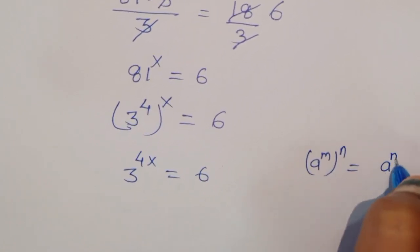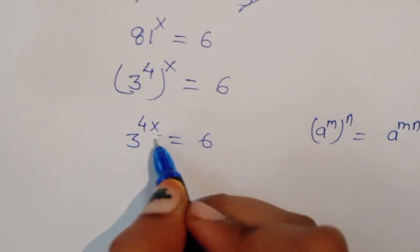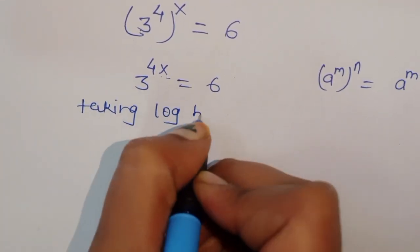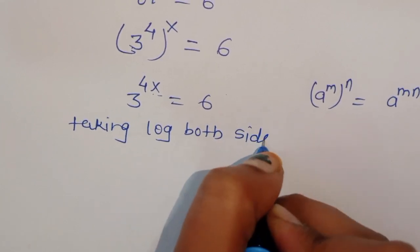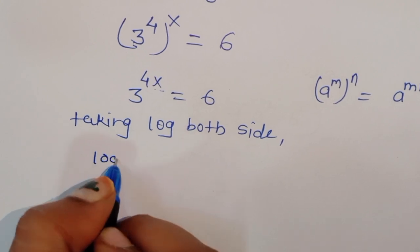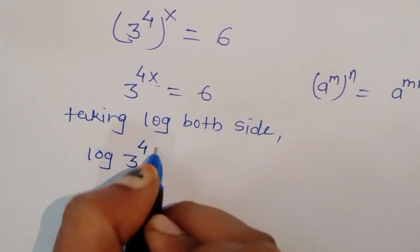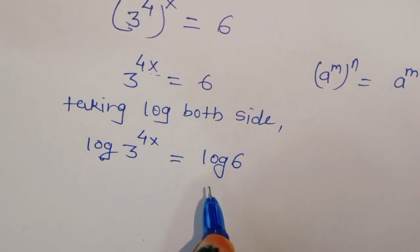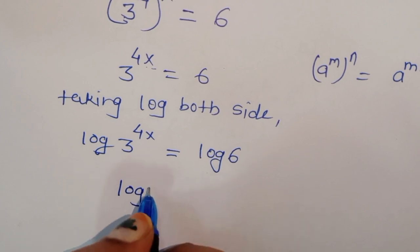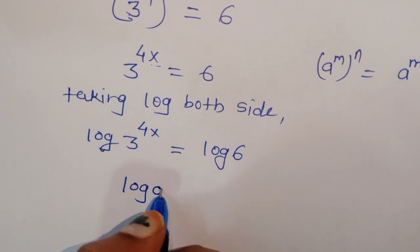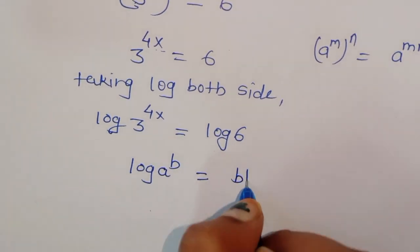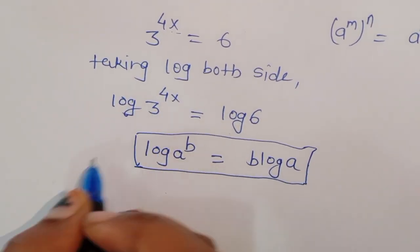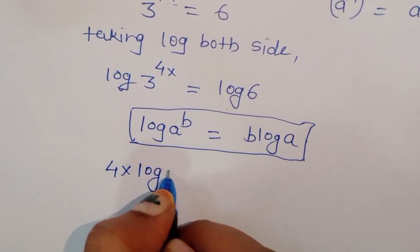Now we can take log both sides. We get log of 3 power 4x is equal to log of 6. We know the formula: log of a power b is equal to b times log of a. Using this formula we can write 4x log of 3 is equal to log of 6.